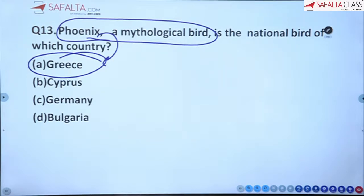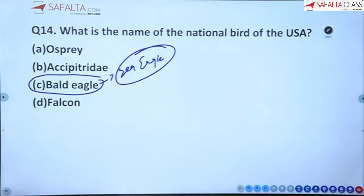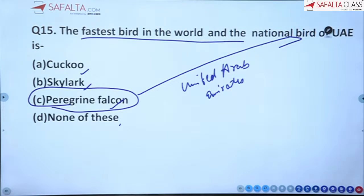Thirteenth: Phoenix is a mythological bird and the national bird of Greece. Fourteenth: the national bird of the USA is the Bald Eagle, which is a species of sea eagle. Fifteenth: the fastest bird in the world and the national bird of UAE is the Peregrine Falcon.